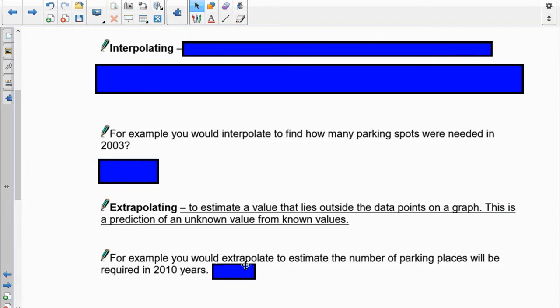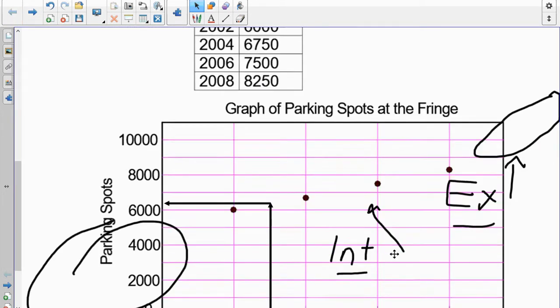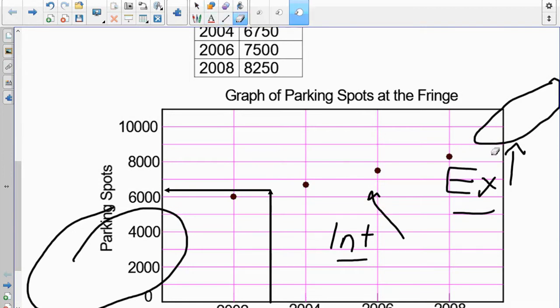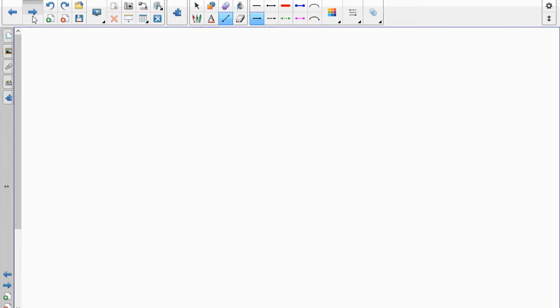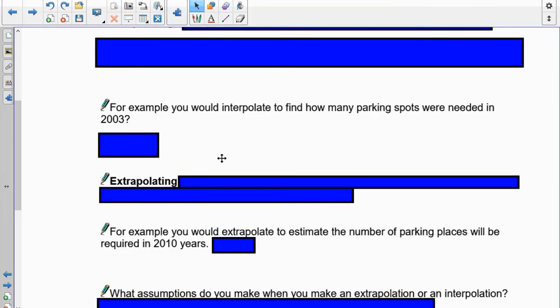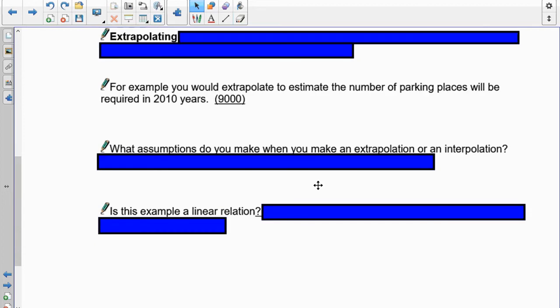It says here, for example, we would extrapolate to estimate the number of parking spots needed for 2010. So here's 2010 right here. So here's 2010. You'd go up. I'll go outside here to see it. I'm going to be somewhere on that line. Maybe I'll put a line there just to help us out with extrapolation. You can see that right now, it looks like we're coming right around the area of 9,000. And the real actual value is 9,000.